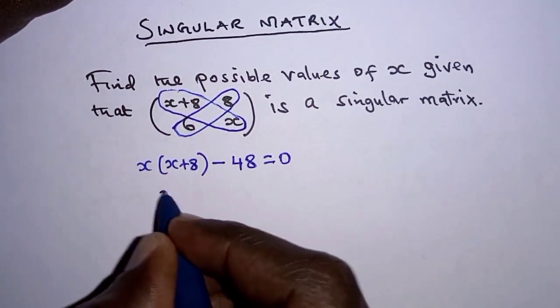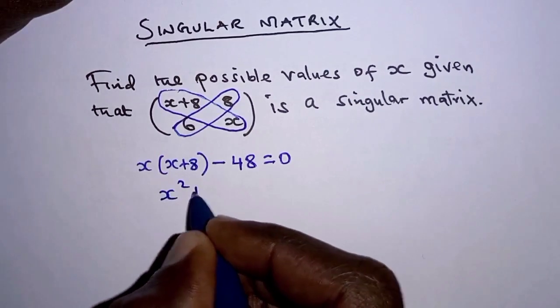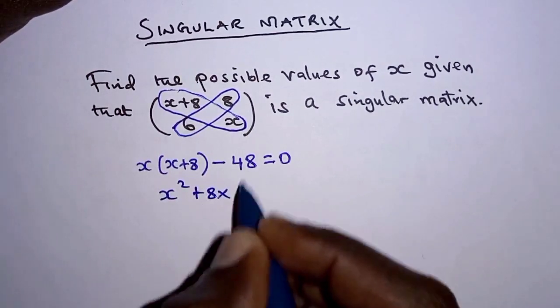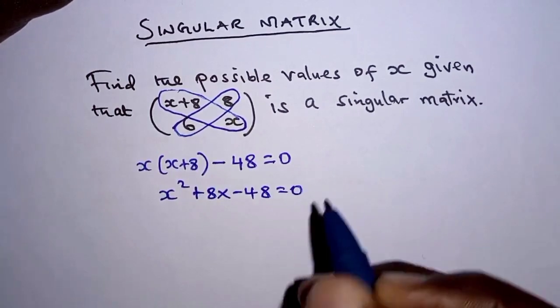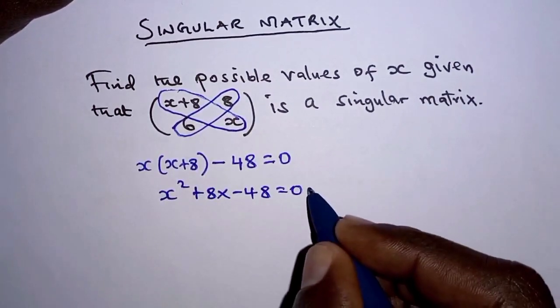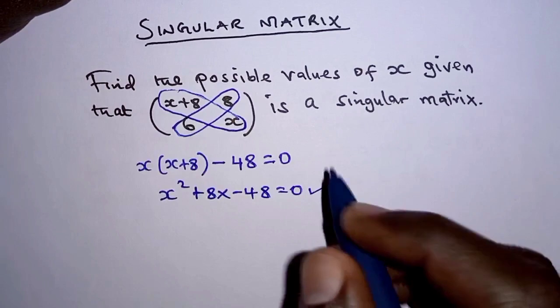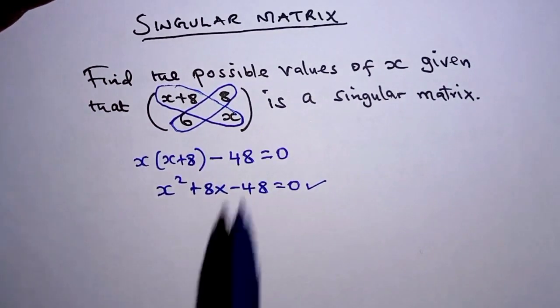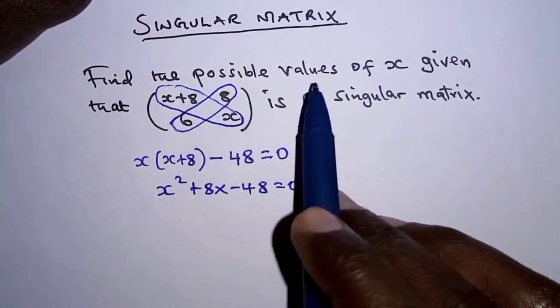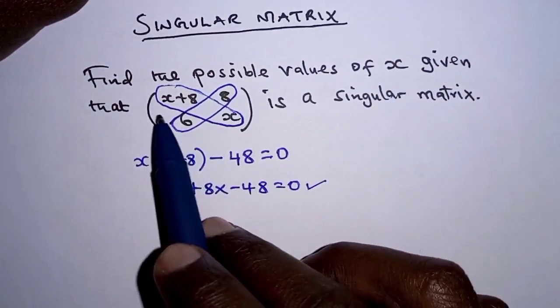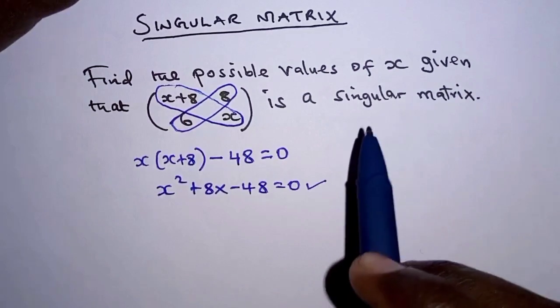Opening the brackets, we have X² + 8X - 48 = 0. We have a quadratic equation to solve, and the solutions to this quadratic equation will give us the possible values of X that satisfy this as a singular matrix.